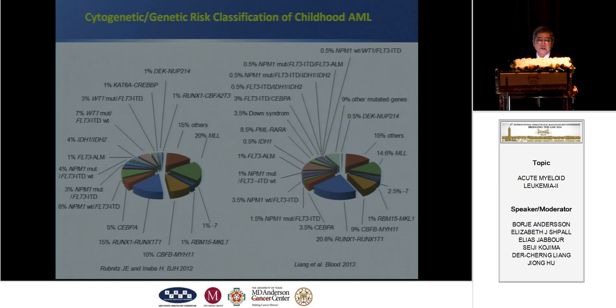The cytogenetics and genetic risk classifications of childhood AML show some differences between St. Jude and our population in Taiwan. The right pie chart is from Taiwan and the left from St. Jude. The blue part indicates t(8;21) translocation — the ratio is 15 to 20%, higher in Taiwan. Conversely, AML with t(15;17) is 15% in Taiwan but 20% in the USA, while inv(16) is quite similar.